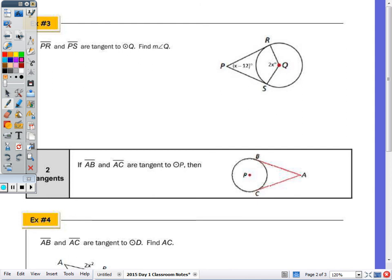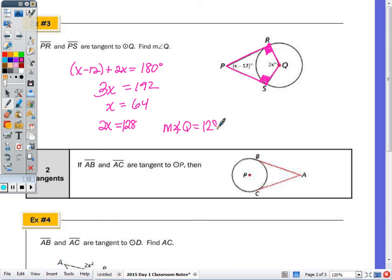Number 3: PR and PS are tangent to circle Q. Find the measure of angle Q. Since QR is a radius and PR is a tangent line, there's a 90-degree angle at the point of tangency. Similarly for QS and PS. Quadrilateral PRQS has an interior angle sum of 360 degrees. Since two angles sum to 180, the remaining angles (X - 12) and 2X must sum to 180. Combining: 3X - 12 = 192, so 3X = 192, and X = 64. The measure of angle Q is 2X = 128 degrees.